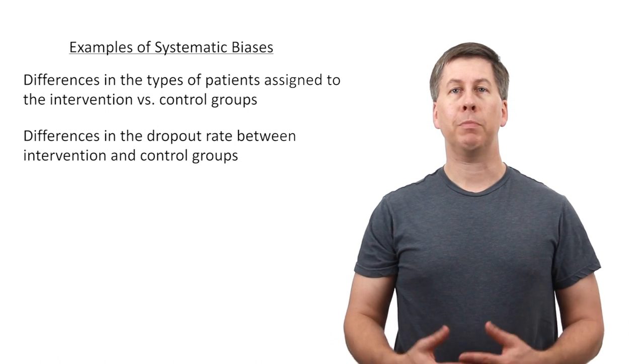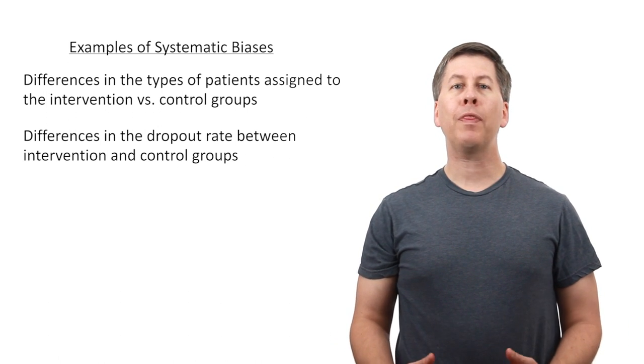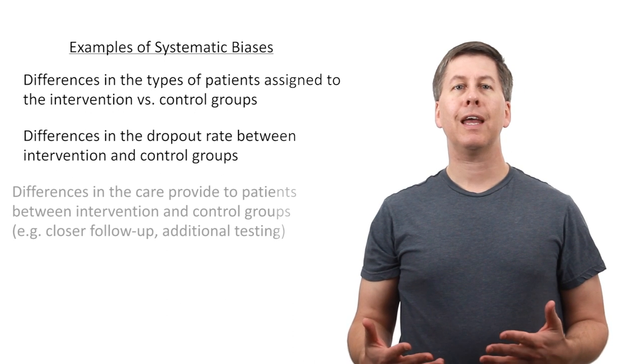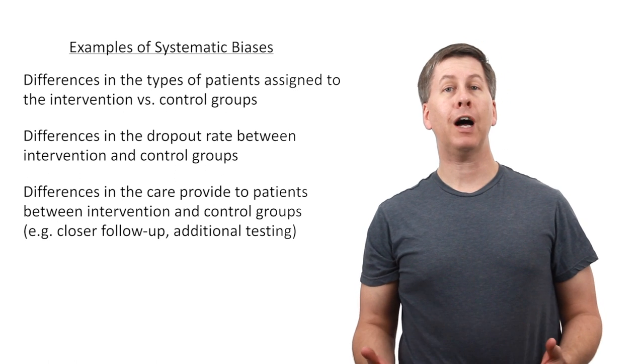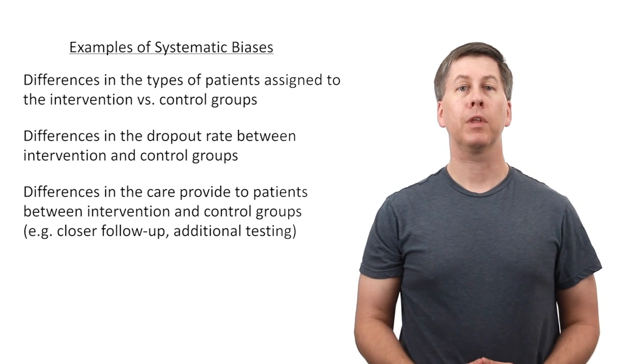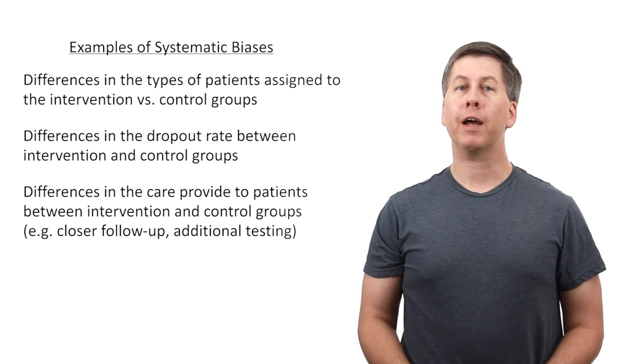If there is a difference in the dropout rate between the intervention and control patients, that results in bias. And when there are systemic differences in the care provided to patients, aside from the intervention, such as closer follow-up or additional testing, that would also be a form of bias.